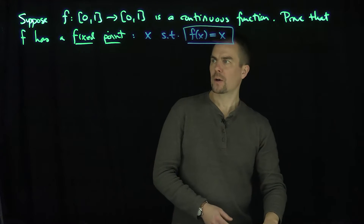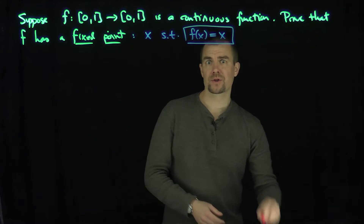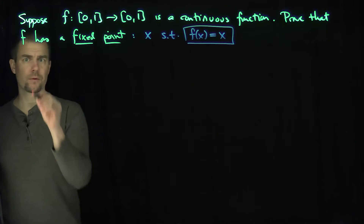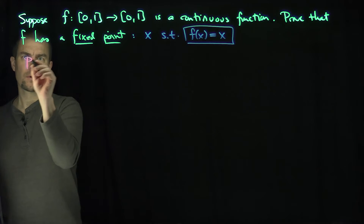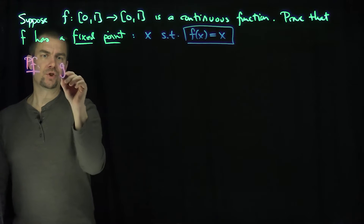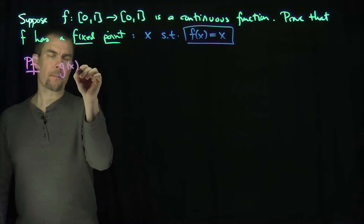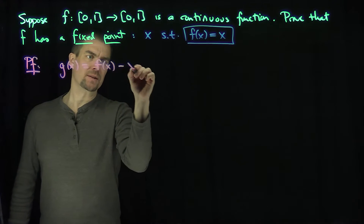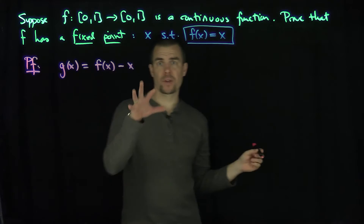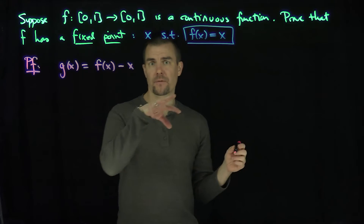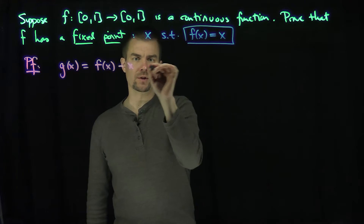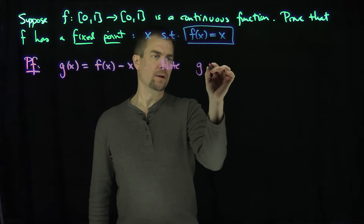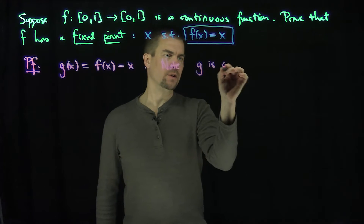So what we're going to do is introduce an auxiliary function, as we typically do for the intermediate value theorem. Here's the proof: we consider g of x, which is f of x minus x. Note that g is the difference of two continuous functions, so g is continuous.